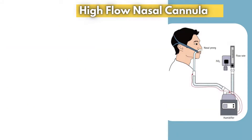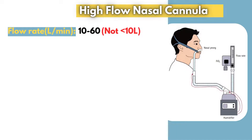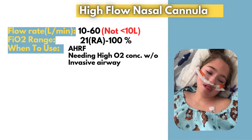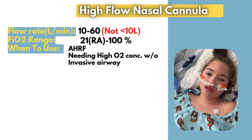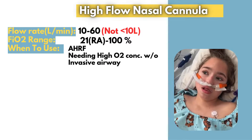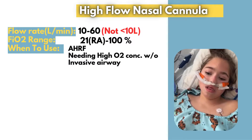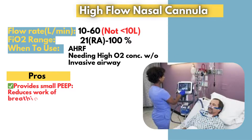The high-flow nasal cannula is an advanced oxygen delivery system capable of providing heated and humidified oxygen at much higher flow rates than a conventional nasal cannula. The flow rate can range from 10 liters per minute to as high as 60 liters per minute, and the fraction of inspired oxygen can be precisely set between 21% (room air) and 100%, offering greater control over oxygen delivery. This device is particularly useful in hypoxic respiratory failure, such as pneumonia or COVID-19, where it can help prevent the need for intubation, and can serve as a bridge to more invasive support, giving patients time to stabilize before mechanical ventilation is required.